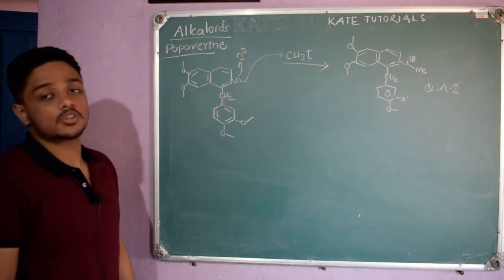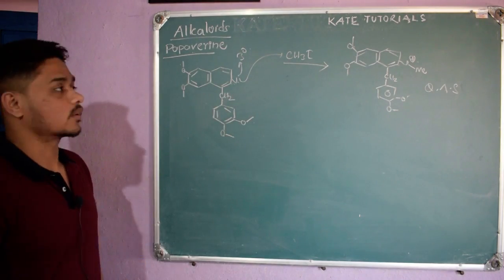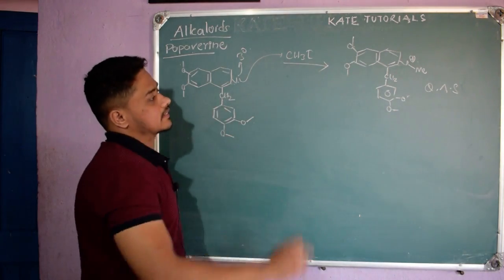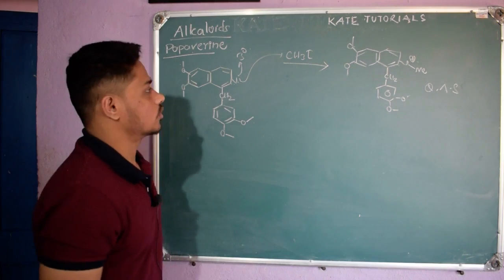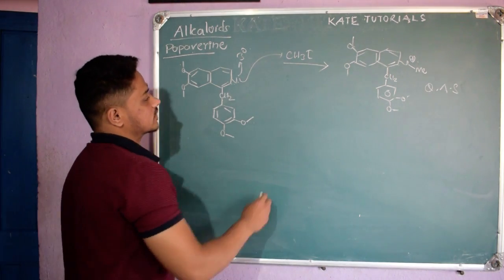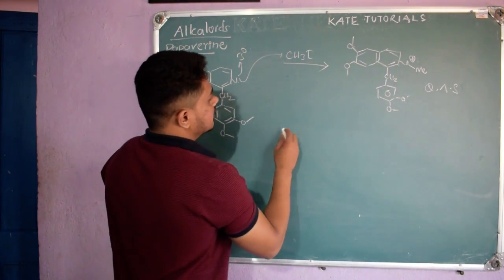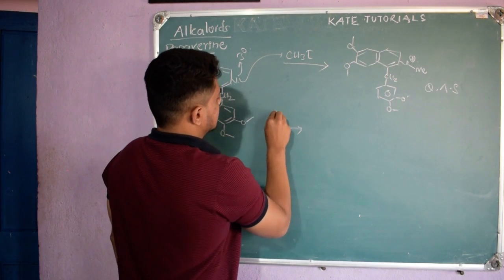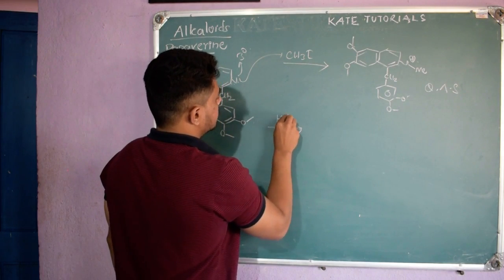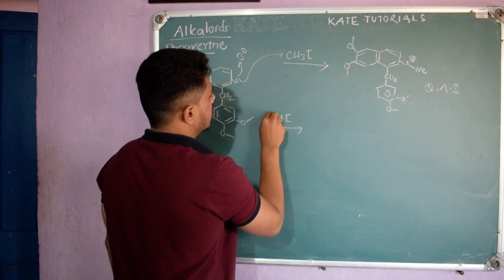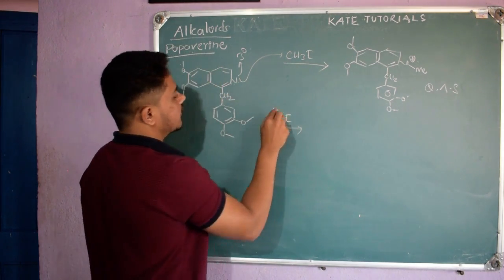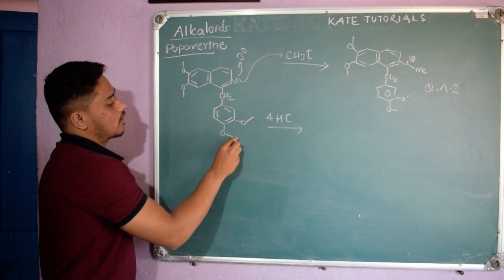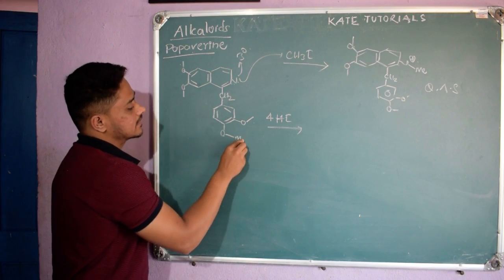From this quaternary ammonium salt we concluded that this nitrogen is tertiary. This was the first conclusion from the previous video, and now I'm repeating it. Further, the reaction with HI — I mentioned four molecules of HI — all the methyl groups (CH₃) are present.